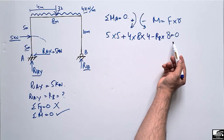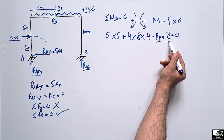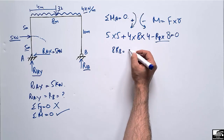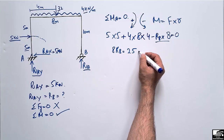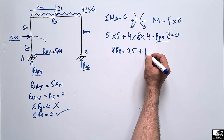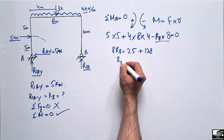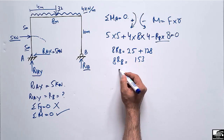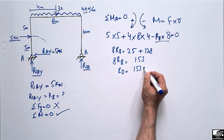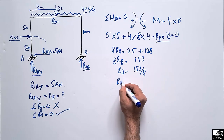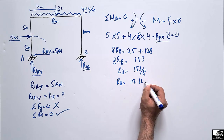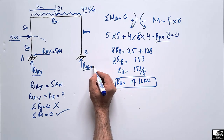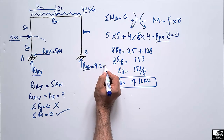Setting the summation of moments at A equal to zero: 25 + 128 − RB × 8 = 0. This gives 153 = 8 × RB, so RB = 153 / 8 = 19.12 kN.